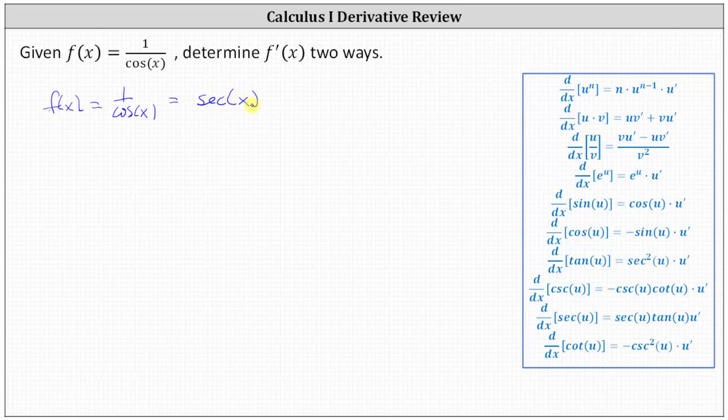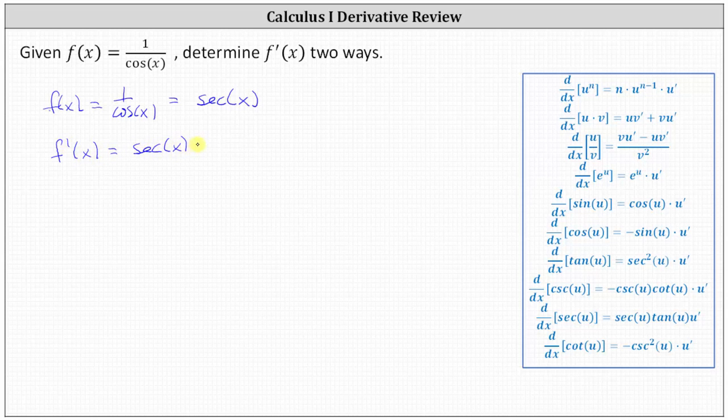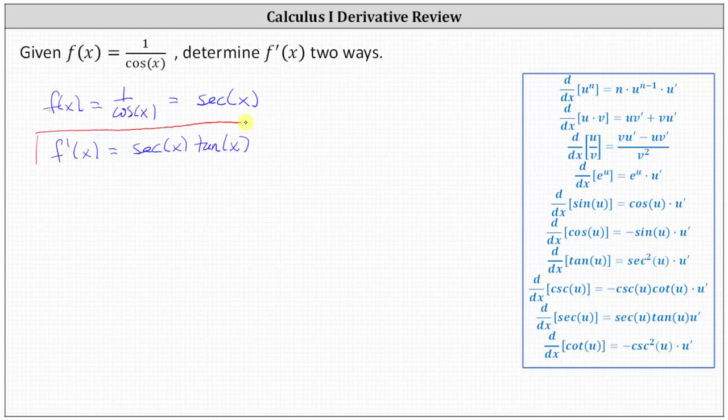And then from here, simply use the derivative formula for the derivative of secant x, which is secant x times tangent x, giving us f prime of x equals secant x times tangent x. This would be the quickest, easiest way to determine the derivative function.